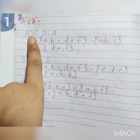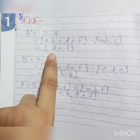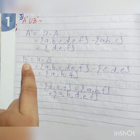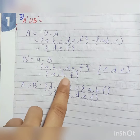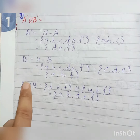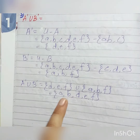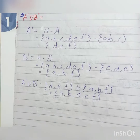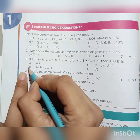Here I have found A complement: Universal set minus A. Then I found B, E, F. Then I found B complement: Universal set minus B, giving A, B, and F. Now, A complement union B complement — taking the union gives A, B, D, E, and F. So only C is missing. Therefore our answer is option B.